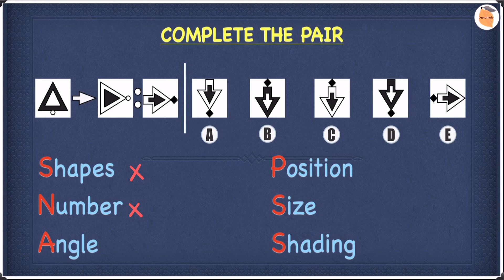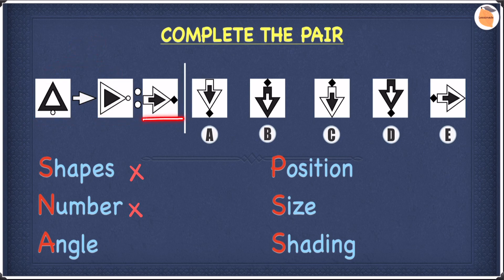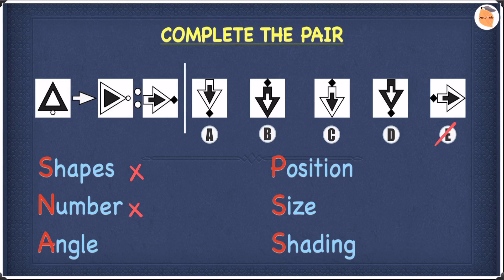Let's move on to angle. If you look at the shape on the left, it rotates 90 degrees clockwise to become the shape on the right. So this means the shape we have here must also rotate 90 degrees clockwise to become our answer. We can already cross off E because it has not been rotated at all. Let's put a tick next to angle.